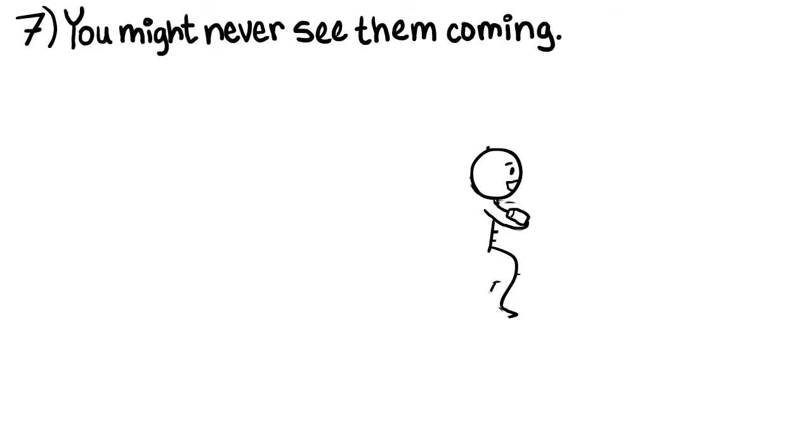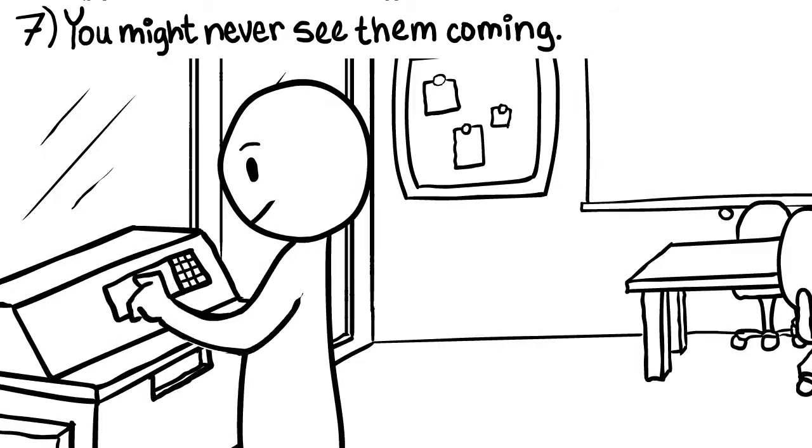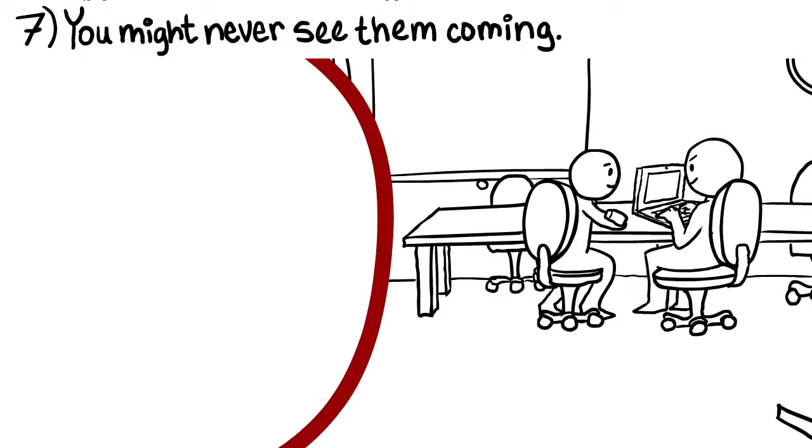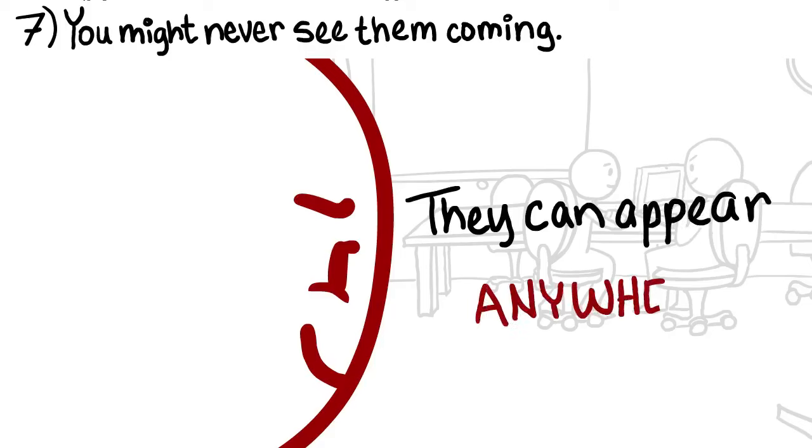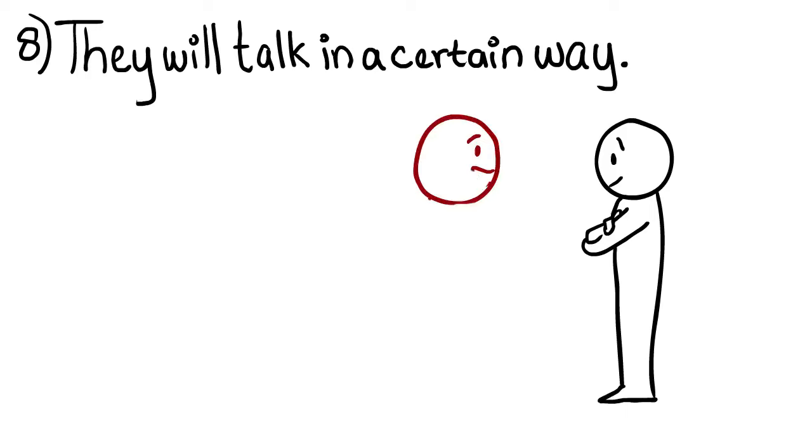7. You Might Never See A Psychopath Coming. The most disturbing thing about psychopaths might well be their ability to blend in. This makes them difficult, if not impossible, to detect. You might not be able to tell if someone is a psychopath. Remember, they can appear anywhere, even in positions of power and responsibility, positions that are supposed to be occupied by people that you can trust.